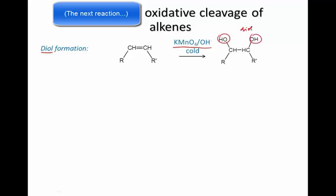So why was it necessary for the permanganate to be cold? Permanganate is an extremely strong oxidizing agent, stronger than dichromate — it's very reactive. By keeping the reaction cold, the reaction is slowed down, and it can be stopped with the diol as the product.